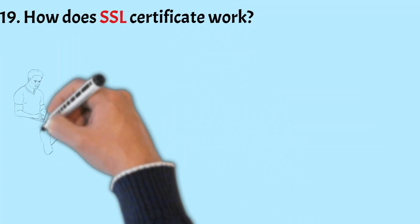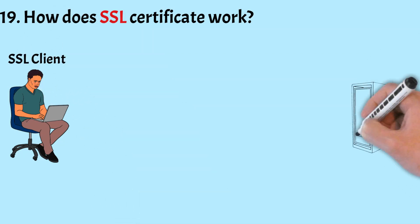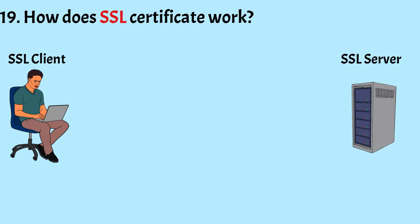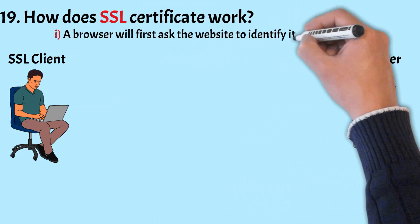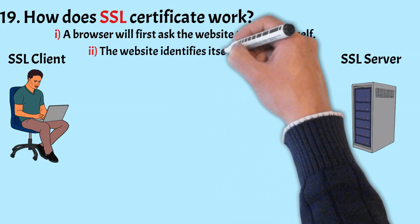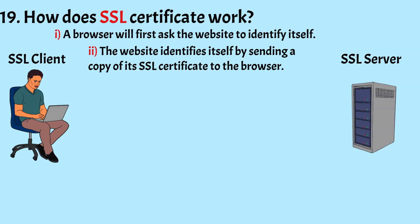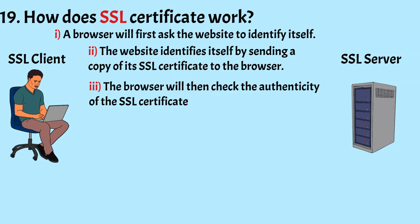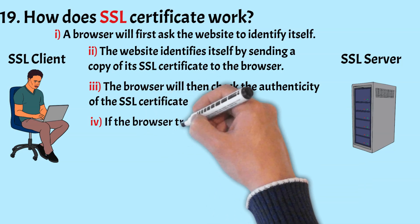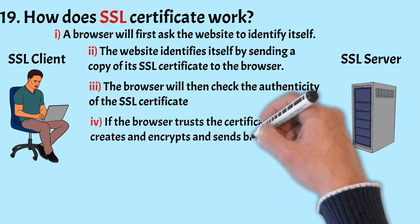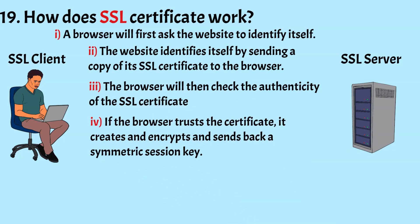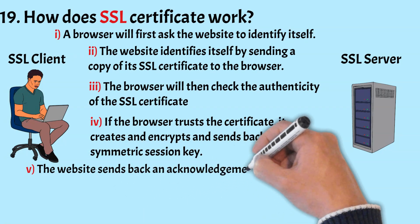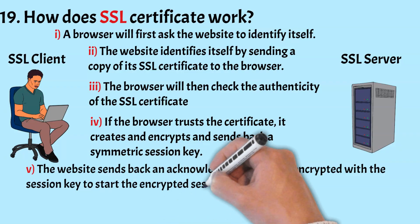How does an SSL certificate work? SSL certificate verifies website authenticity and allows website traffic to be encrypted. When we want to access a website from a browser, the browser first asks the website to identify itself. The website identifies itself by sending a copy of its SSL certificate to the browser. The browser checks the authenticity of the SSL certificate from its list of trusted certificate authorities. If the browser trusts the certificate, it creates and encrypts a message using the website's public key and sends back a symmetric session key. The website then decrypts the session key using its private key and sends back an acknowledgement to start the encrypted session.